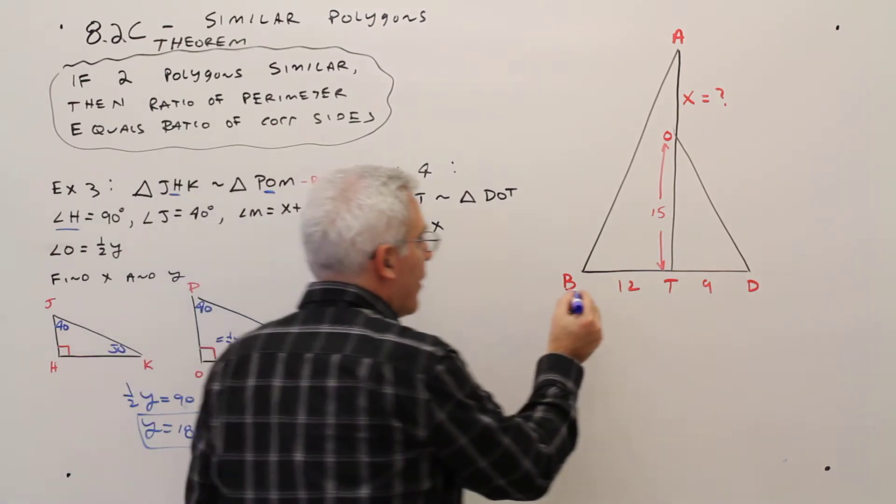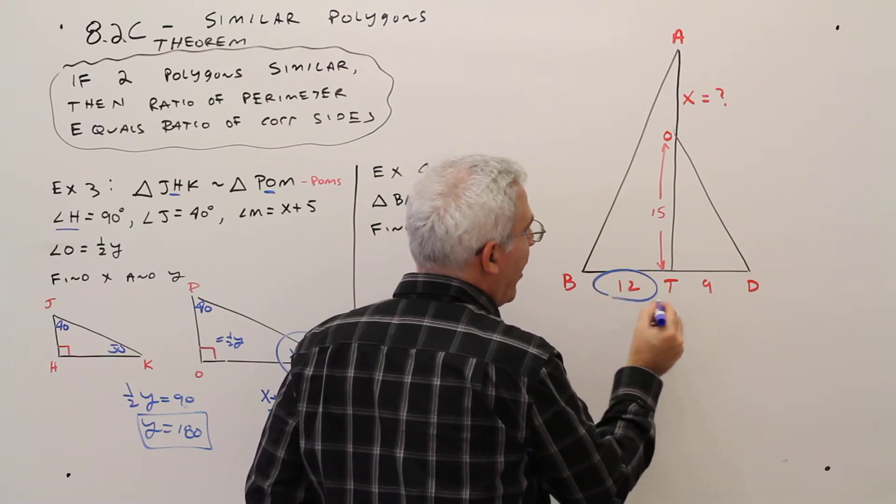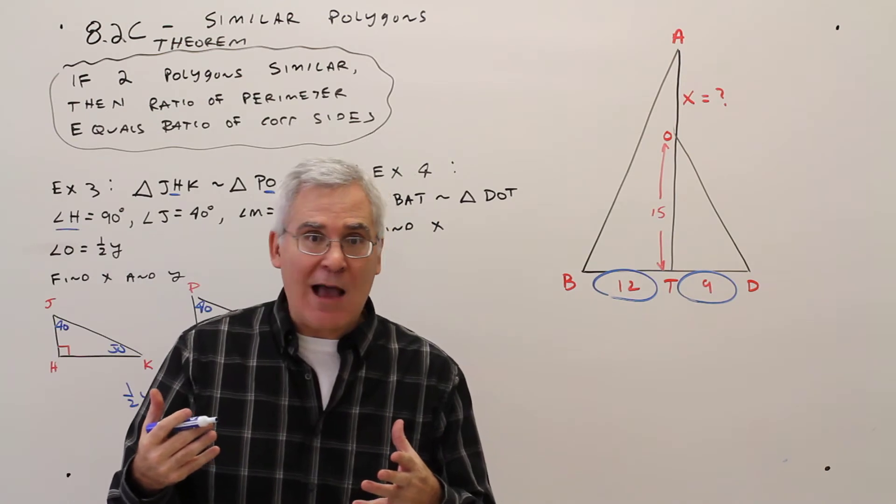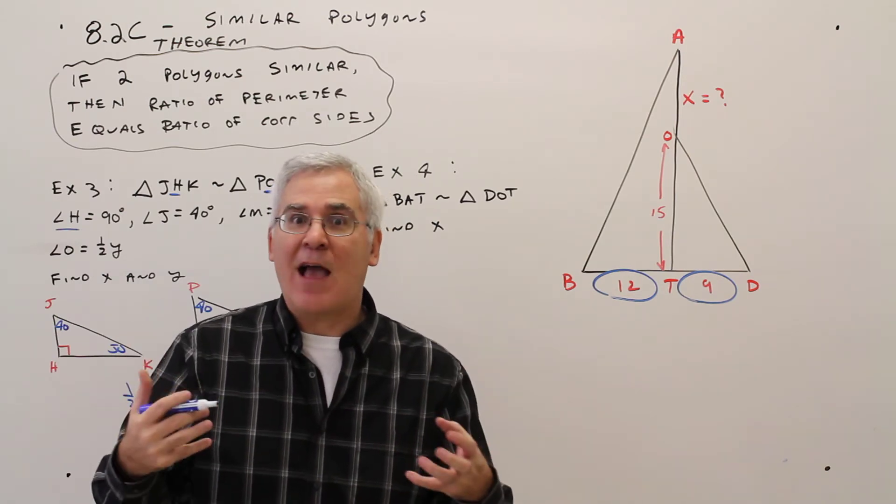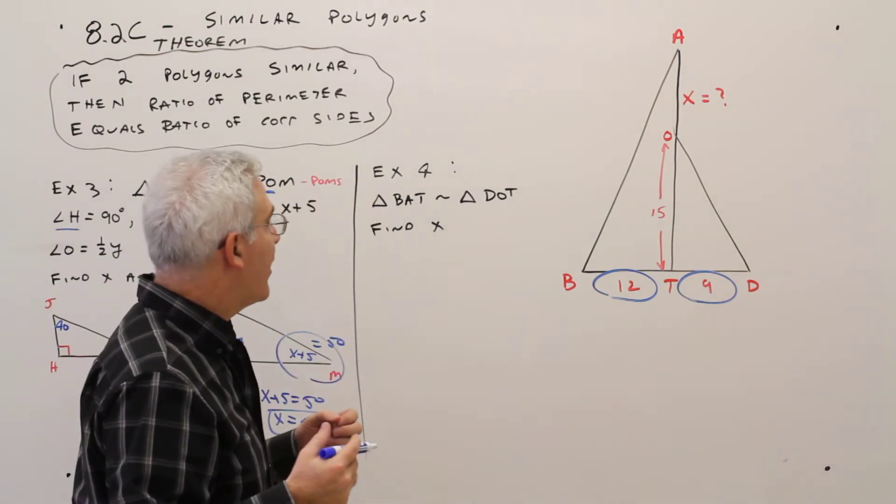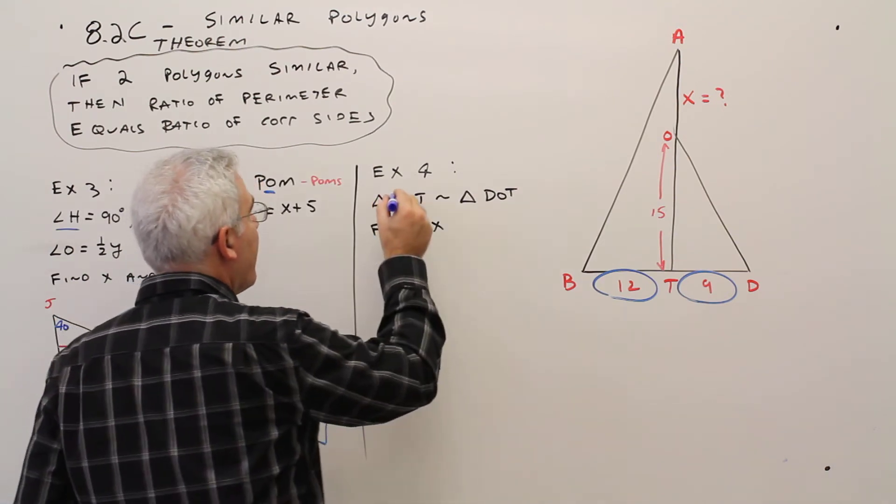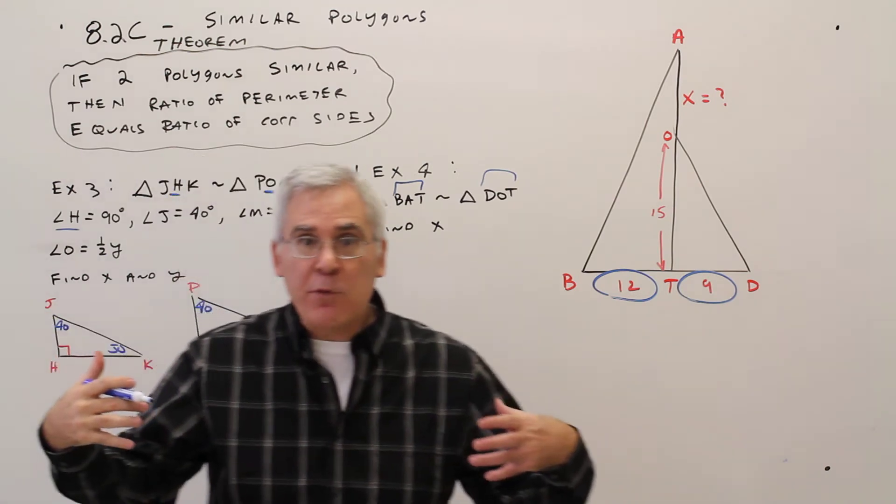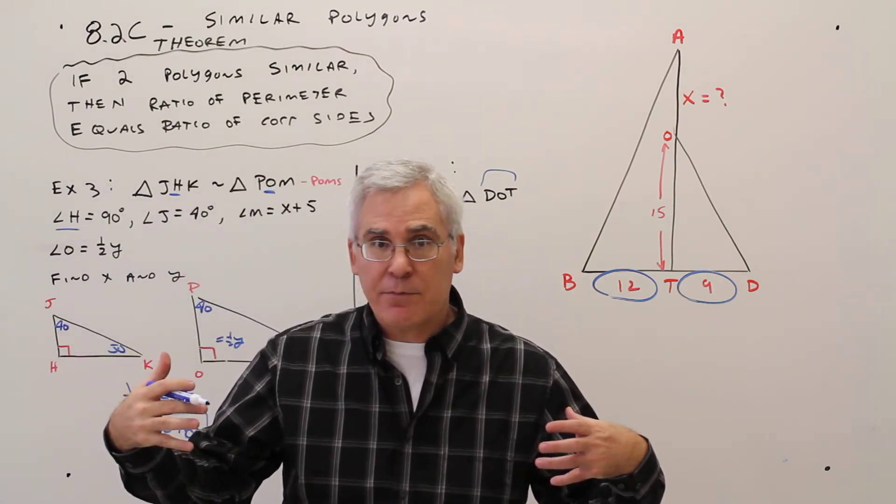Oh! I've got a 12 there, and I've got a 9 there. If those are corresponding sides in the triangles, I've got my reference right there. So let's see, BT, first and last, and DT, first and last, those are corresponding sides.